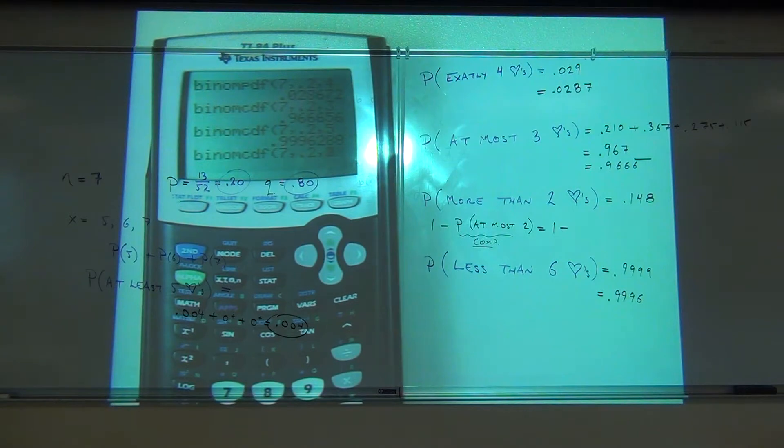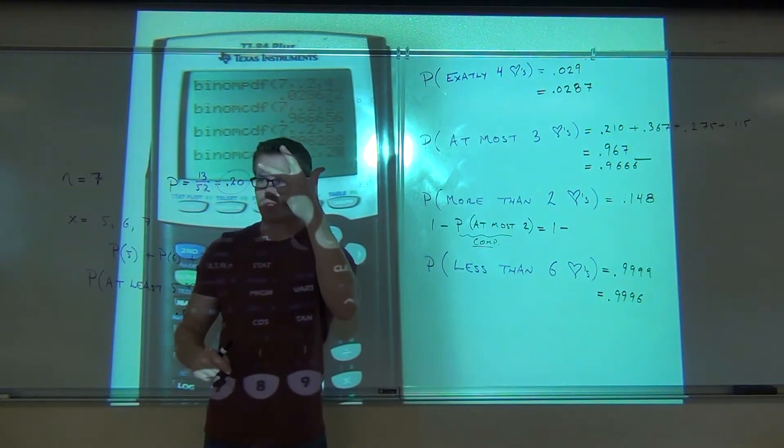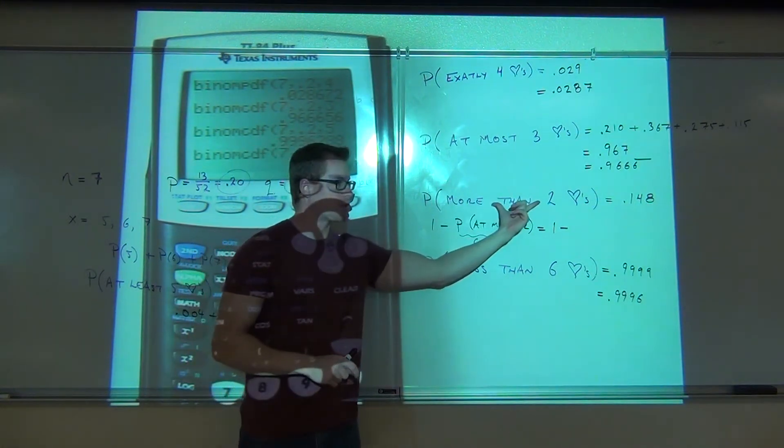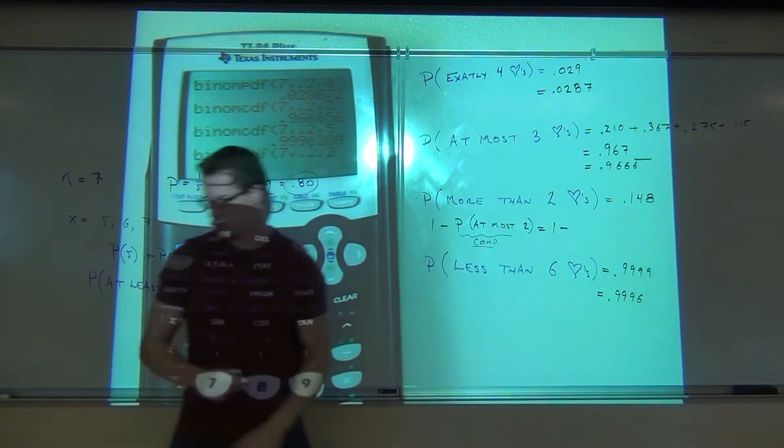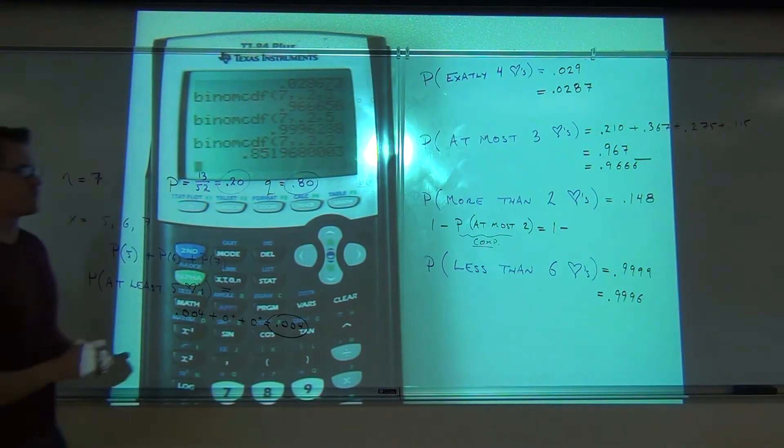It's two. Now when you plug in this, remember what this is giving you right here. When you do the two, that's giving you zero or one or two. Does that make sense? It's not giving what you want, it's giving you the complement of what you want. We'll press enter. That's giving us point eight five one... point eight five two zero.